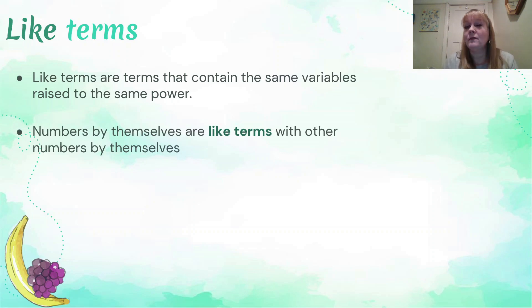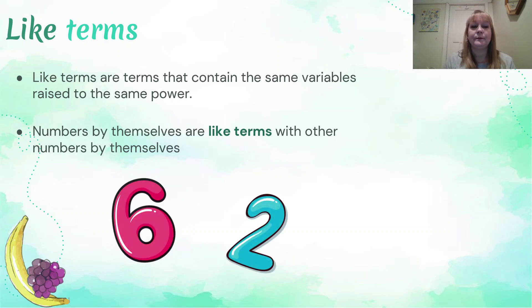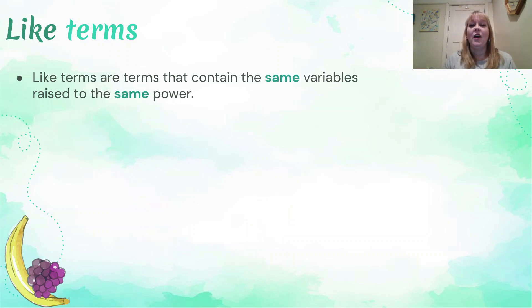Numbers by themselves, such as fractions, decimals, and whole numbers, these are also considered a group of like terms with other numbers that are by themselves. For example, the number six, the number two, the number half, the number a million, the number negative five. All of these are considered a group of like terms. They're just normal numbers that we've been dealing with ever since primary school.